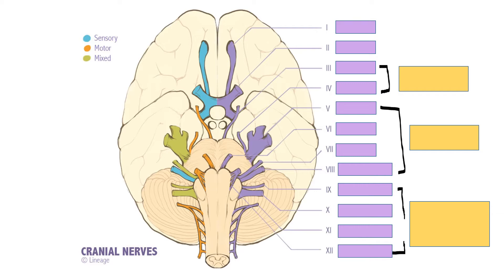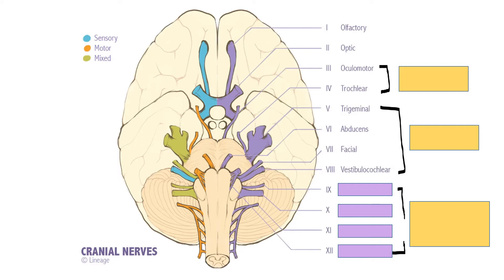In this diagram the cranial nerves are put in order. Cranial nerve number one, olfactory. Cranial nerve number two, optic. Number three, oculomotor. Number four, trochlear. Number five, trigeminal. Number six, abducens. Number seven, facial. Number eight, vestibulocochlear.